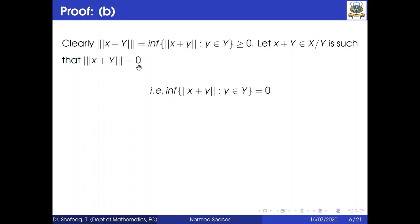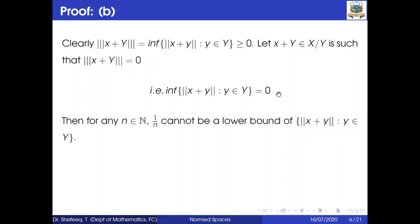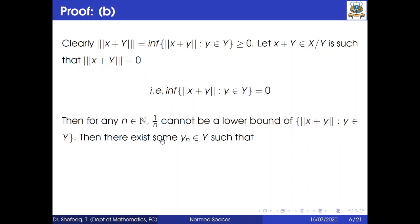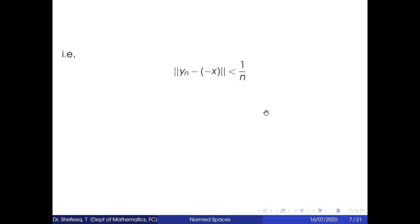If the infimum of this set equals 0, then for any n in ℕ, 1/n cannot be a lower bound. Since the infimum is the greatest lower bound, there exists some y_n in Y such that ‖x + y_n‖ < 1/n. This means ‖y_n − (−x)‖ < 1/n, so y_n converges to −x as n tends to infinity.